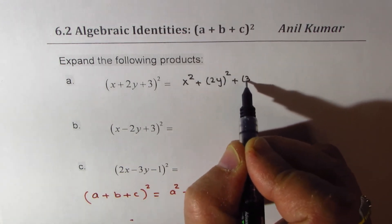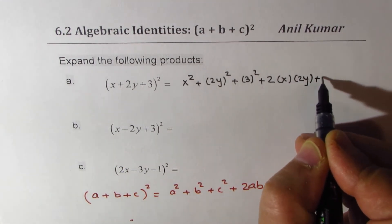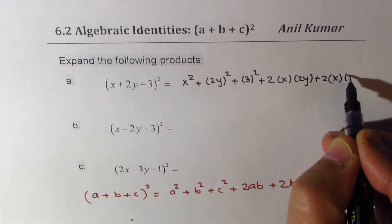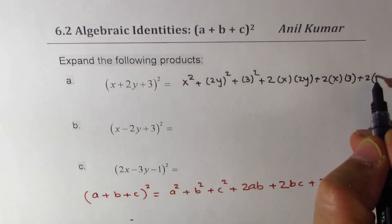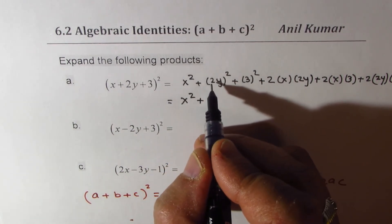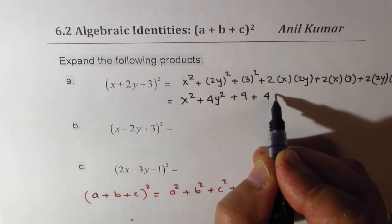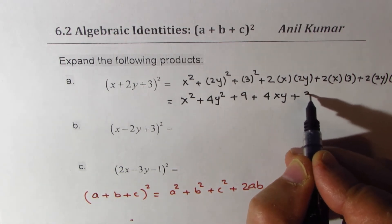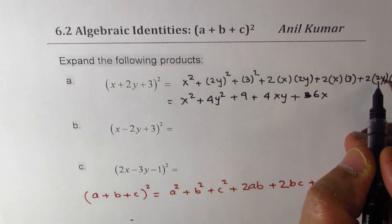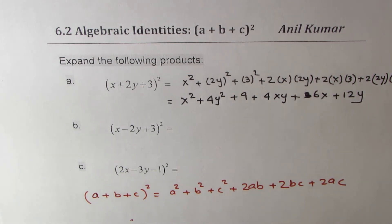...plus 2 times x times 2y, plus 2 times x times 3, plus 2 times 2y times 3. So that gives us x² + 4y² + 9 + 4xy + 6x + 12y. That is the expanded form of (x+2y+3)².